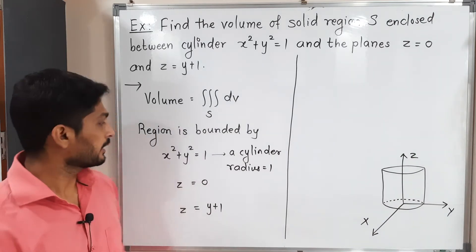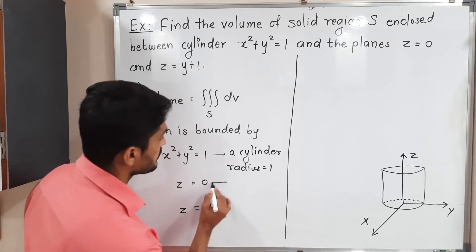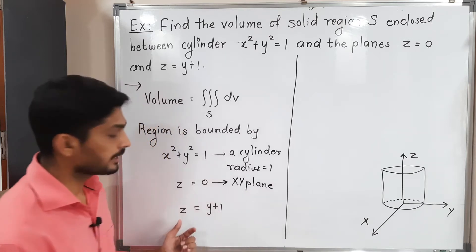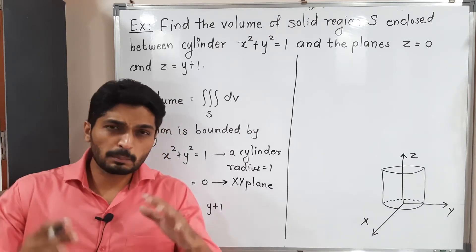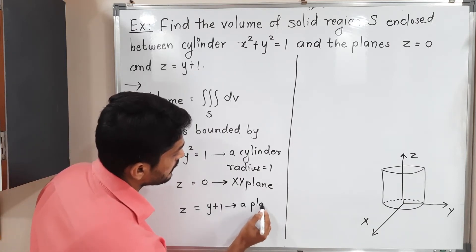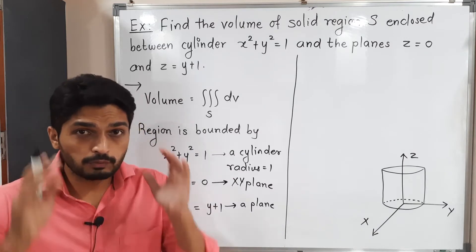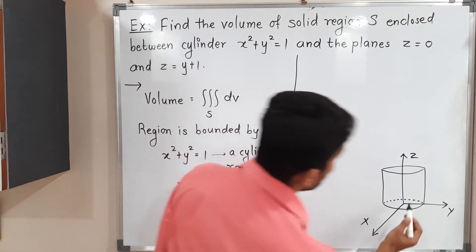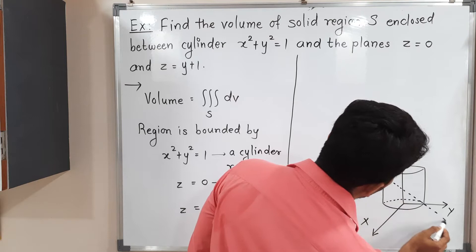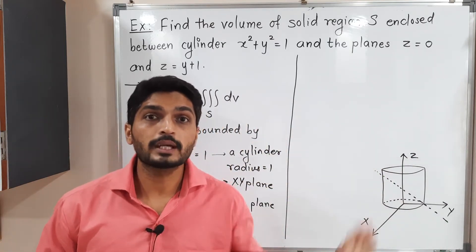Next, z = 0 is the equation of the xy-plane. And z = y + 1 is a plane — a cross plane. This equation has variables y and z only, so in the yz-plane it is a line.